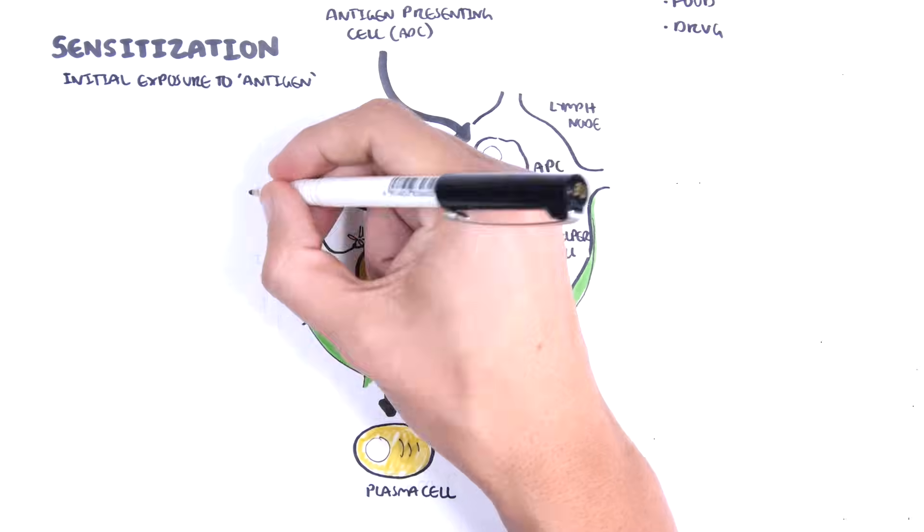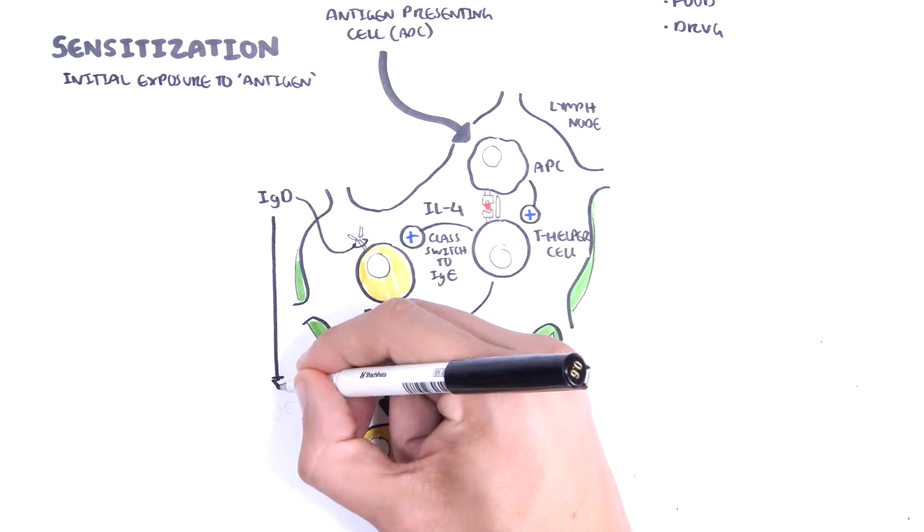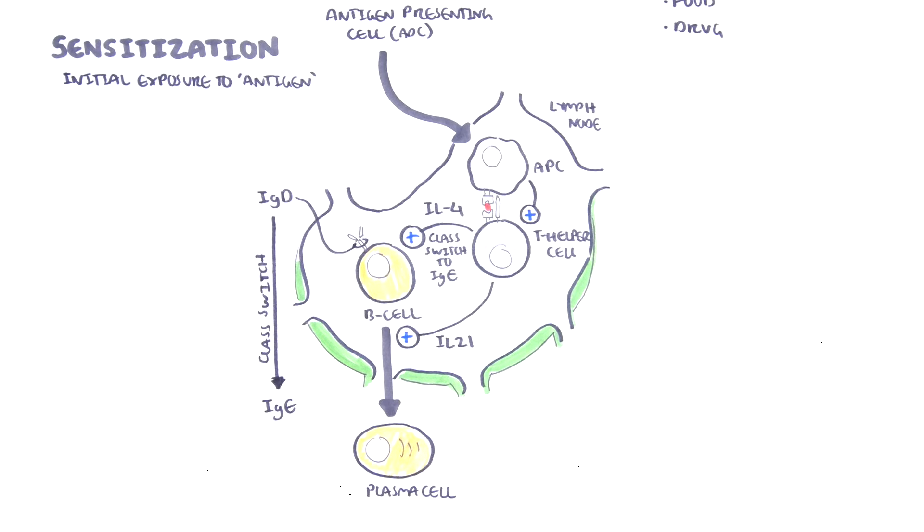Interleukin-4 stimulates the B cells to class-switch from an IgD, for example, to an IgE immunoglobulin. The plasma cells are now IgE-secreting plasma cells, which are primed specifically towards the particular allergen.